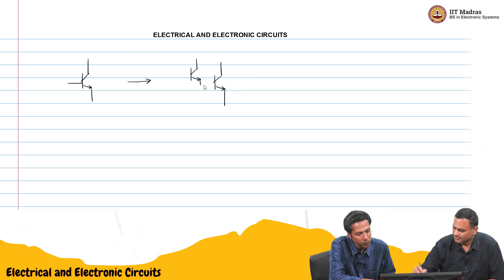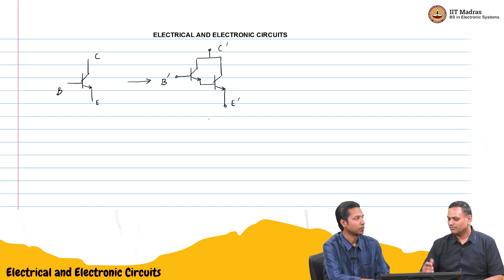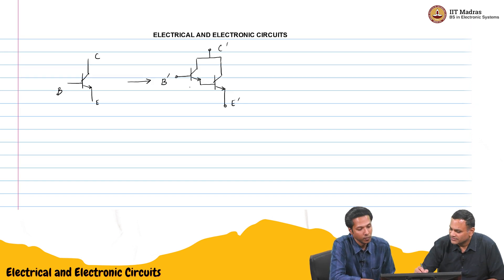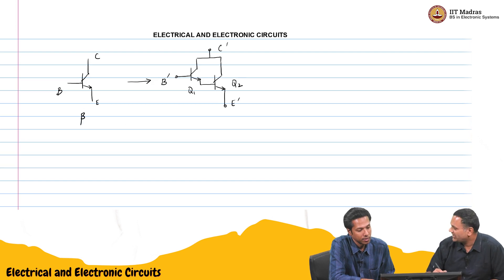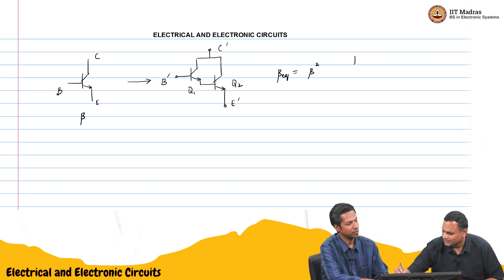I think what we did was we took two devices like this and we created, so each one has a base, collector and emitter. But this one has some composite, right? Correct. So maybe we will call it some B prime, C prime and E prime. These are the three new terminals. So you have two transistors Q1 and Q2 and we found out if one transistor has beta, this one had equivalent beta, it was beta squared. Yes, I remember this, Darlington pair, correct.